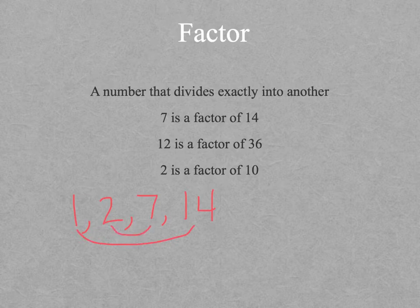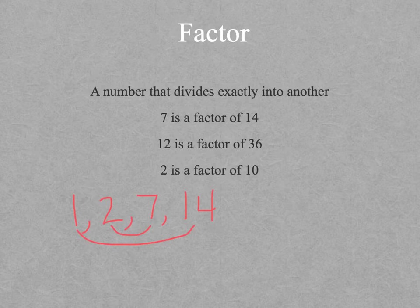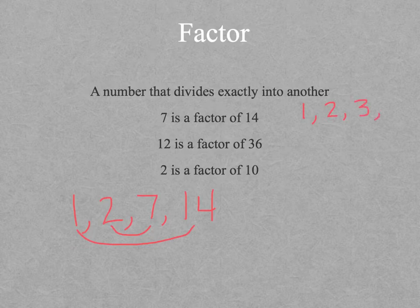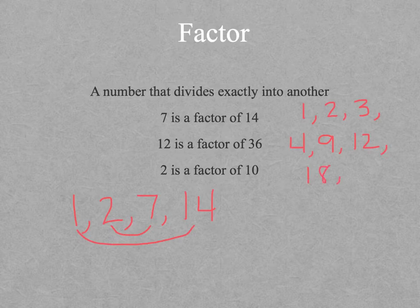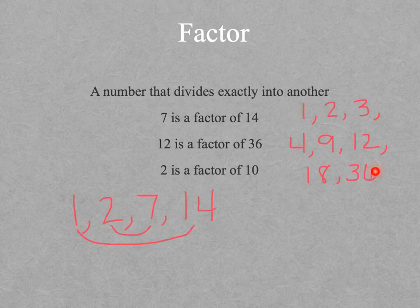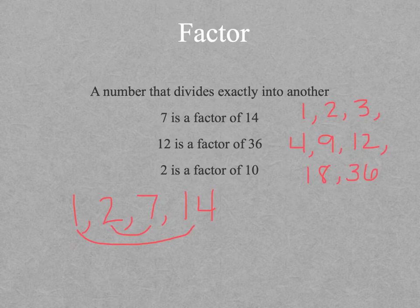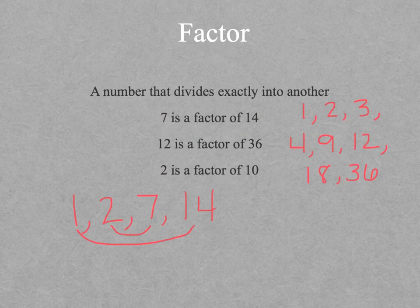What about the factors of 36? There's a lot of those: 1, 2, 3, 4, 9, 12, 18, and 36. Can you see how 1 times 36 is 36, 2 times 18 is 36, 3 times 12 is 36, and 4 times 9 is 36? All of these are factors of 36.